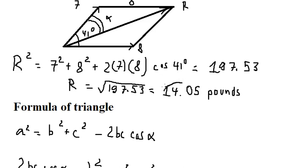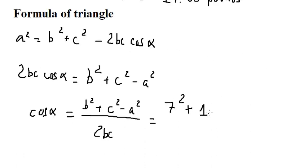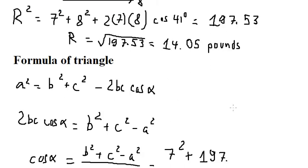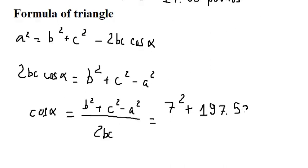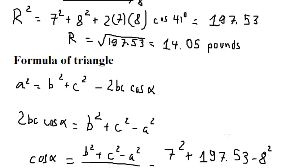We put the values in here. We know that c square is about this number to the power of two. I use this number and put it in here over two multiplied by seven and this number 14.05.